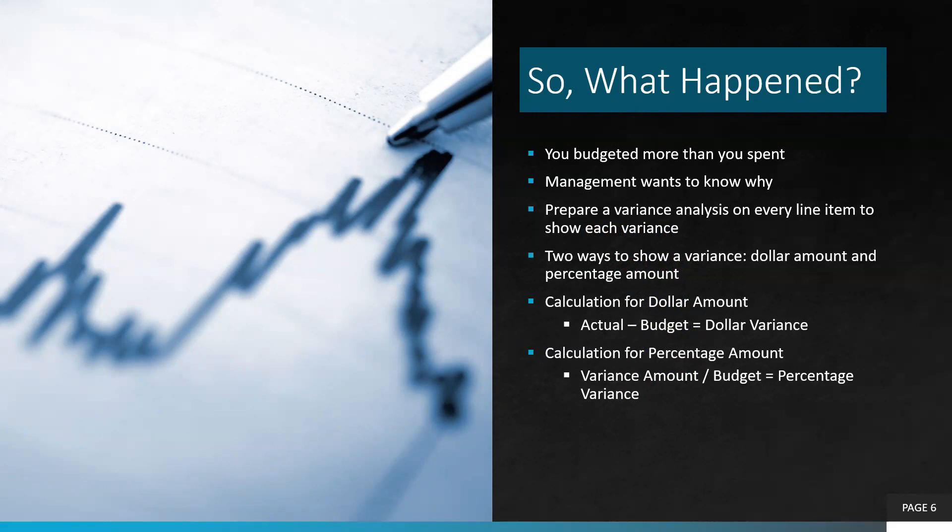When preparing a variance analysis, we're going to prepare an analysis on every single line item to show the variance of the dollar amount and the percentage amount. The calculation for the dollar amount is very simple: it's actual minus budget — that gives you the dollar variance. The calculation for the percentage amount is the variance amount divided by the budget amount, and that gives you the percentage variance.